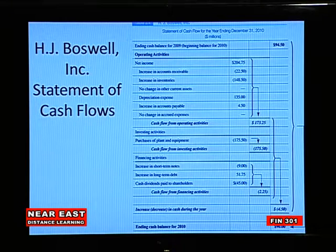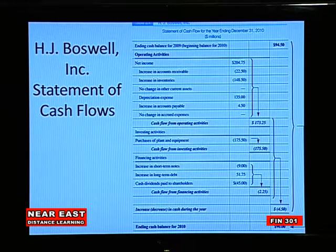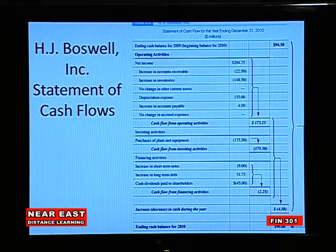To solve this example, we start with the ending cash balance in 2010, then calculate operating activities: net income, increase in accounts receivable, increase in inventories, and depreciation expenses, to arrive at net cash flow from operations. Then we calculate cash flow from investing activities, including purchase of plant and equipment. The third section includes cash flow from financing activities — short-term notes, long-term debts, and dividends paid to shareholders.